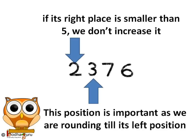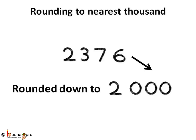The 100's place is 3, which is less than 5. So all places right to 1000's place is made 0 and the 1000's place is unchanged. So it would be 2000 then. So 2376 is rounded down to 2000 when we round it to the nearest 1000.